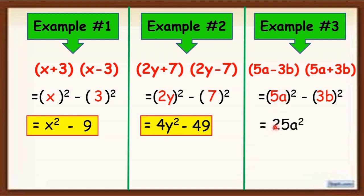5a raised to 2 is equal to 25a². Because 5 times 5 is equal to 25, and a raised to 2 is equal to a². Minus 3b quantity squared is equal to 9b². So, the final answer is 25a² - 9b².